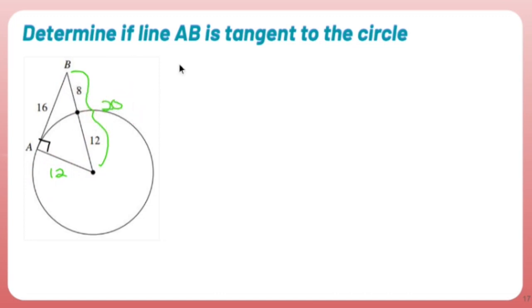So I have a triangle of 16, 12, and 20. So I'm going to use the converse of the Pythagorean theorem to show that this is a right triangle.